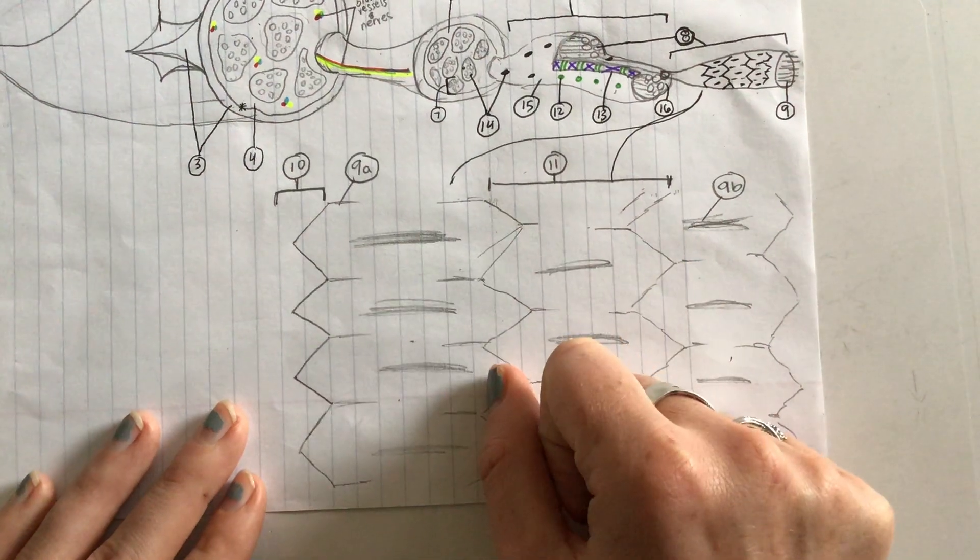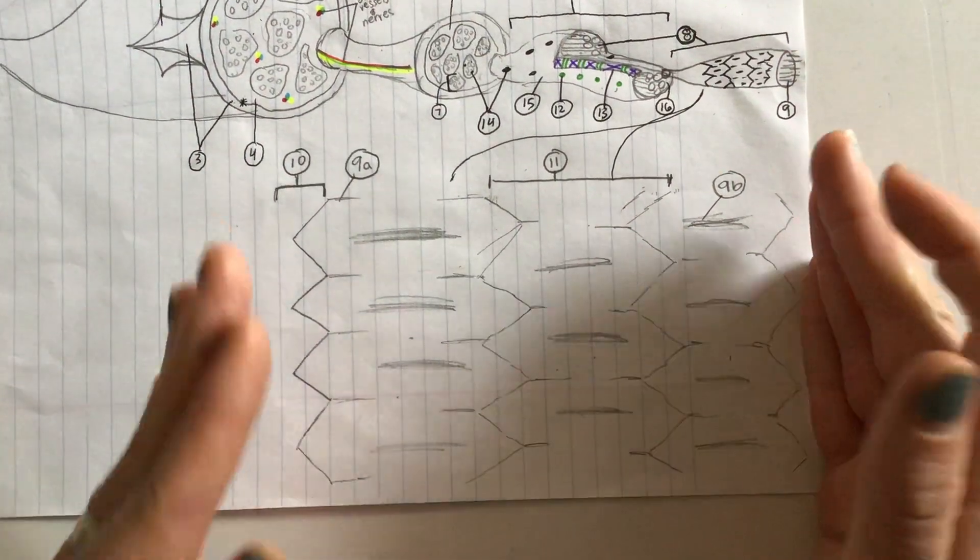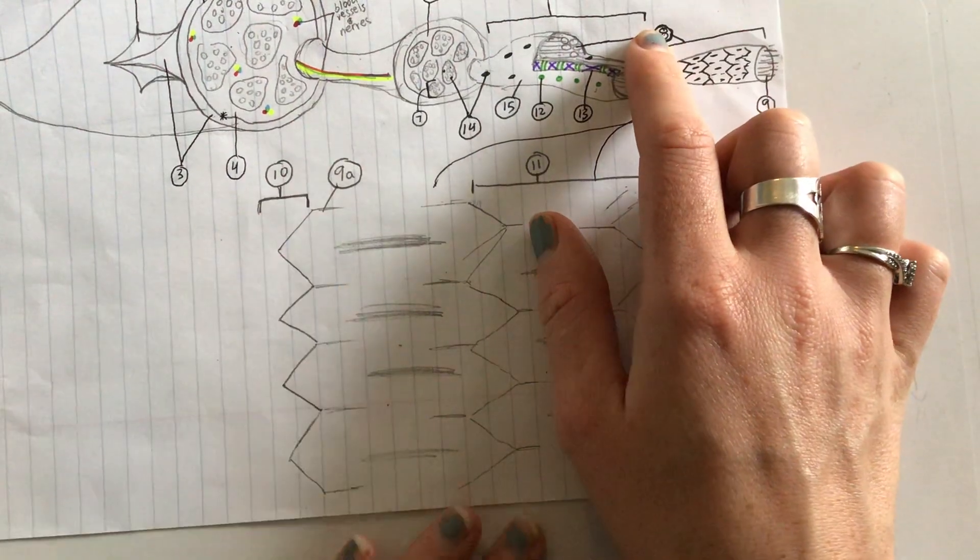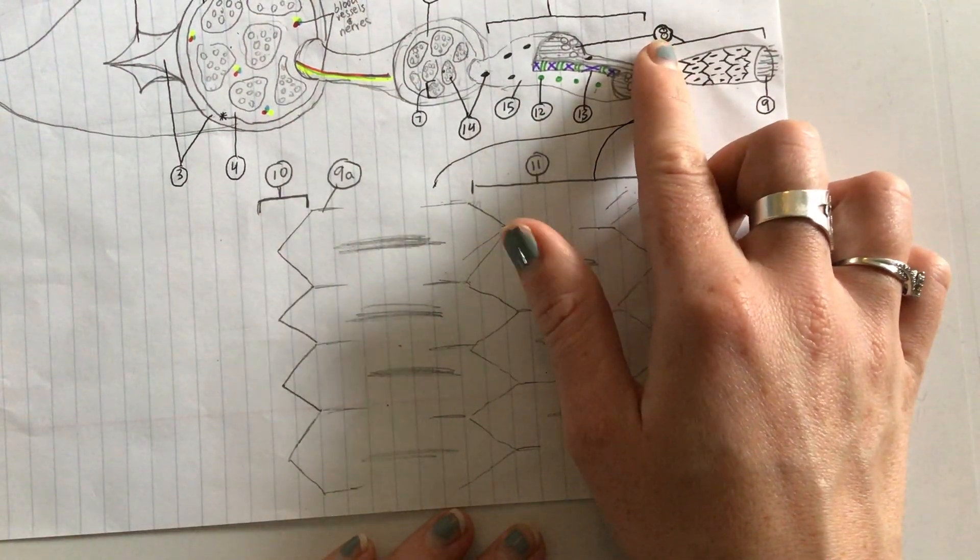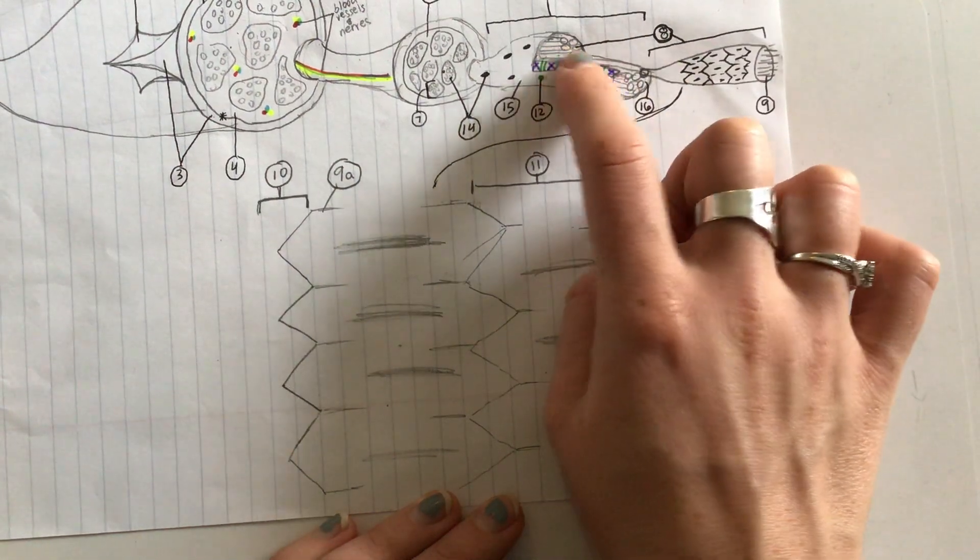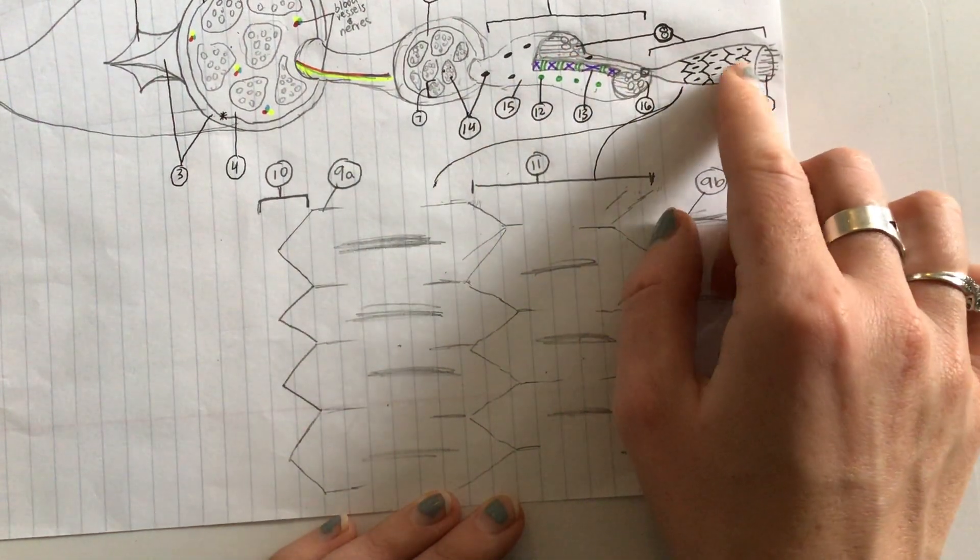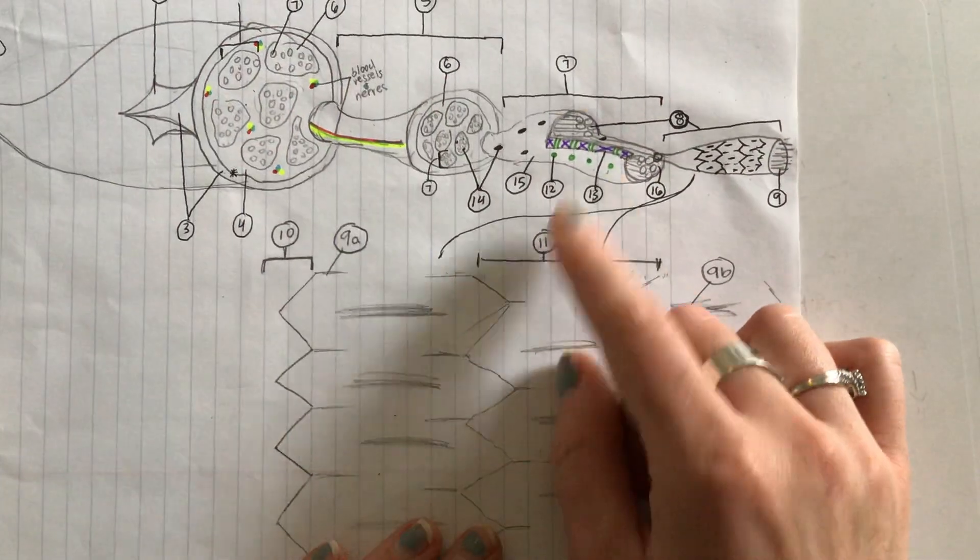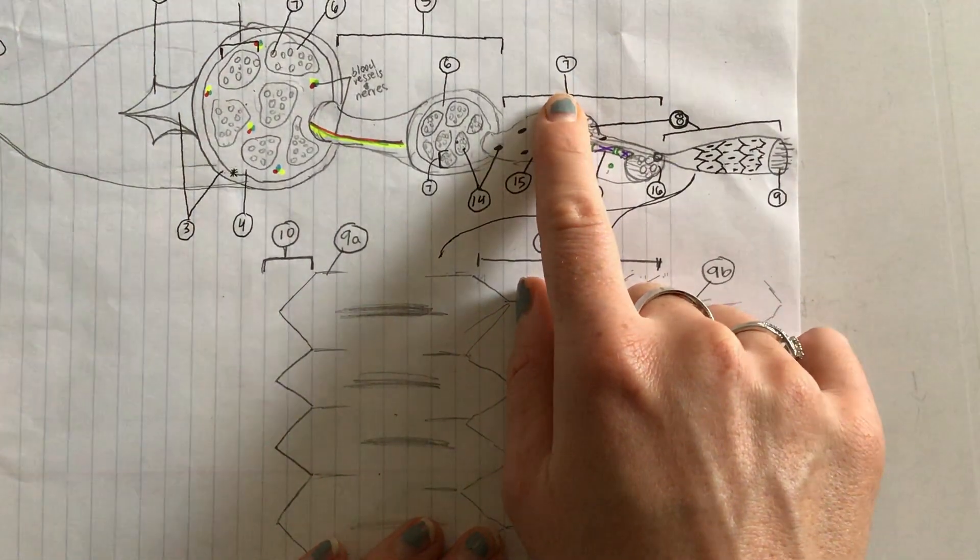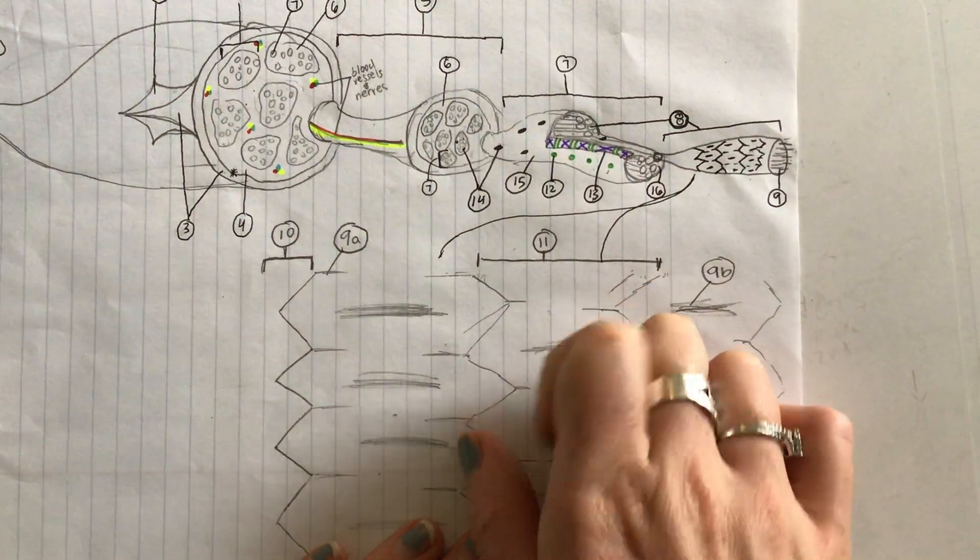This is all inside of number 8. What is number 8? It is myofibrils. Myofibrils are these long strands of protein which we find inside of number 7. What is number 7? Number 7 is a muscle fiber or muscle cell.